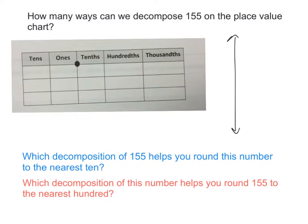Take a moment right now and draw yourself a really quick place value chart that looks like this. You only need it to go from the tens place to the thousandths place. Draw a couple of horizontal lines and one, two, three, four vertical lines. Then go ahead and label it: tens, ones, tenths, hundredths, and thousandths.